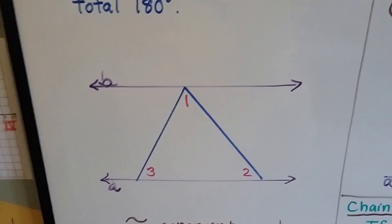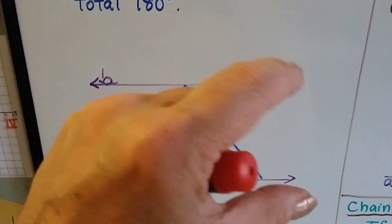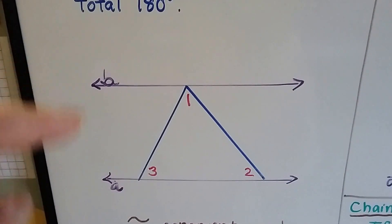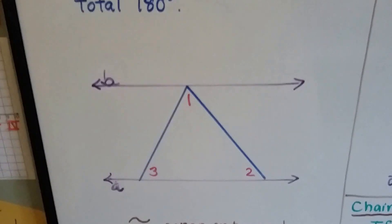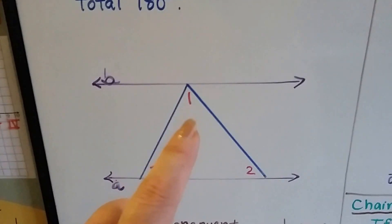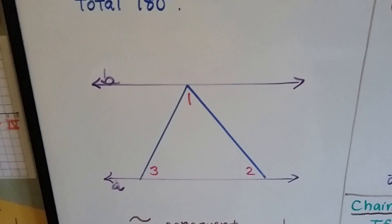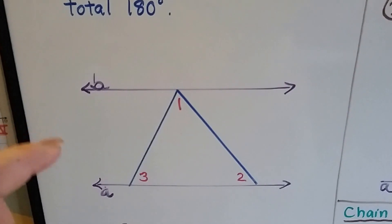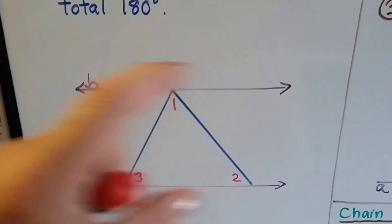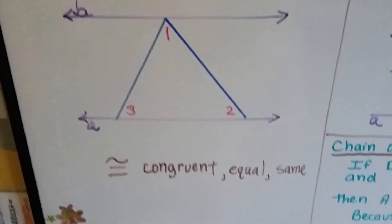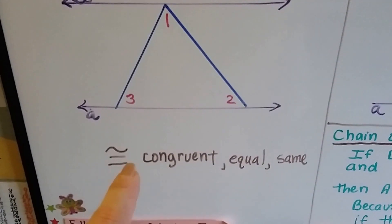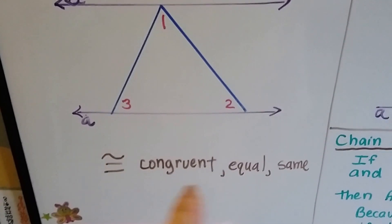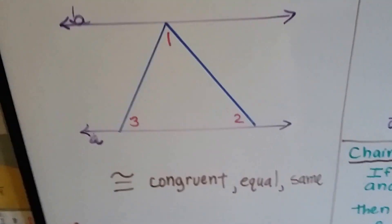So if we've got parallel lines like this — line A and line B — and we've got a triangle, we can prove that this triangle is 180 degrees by the triangle sum theorem and by drawing these parallel lines. The little equal sign with the little curve on top of it means congruent — that means it's equal, the same.